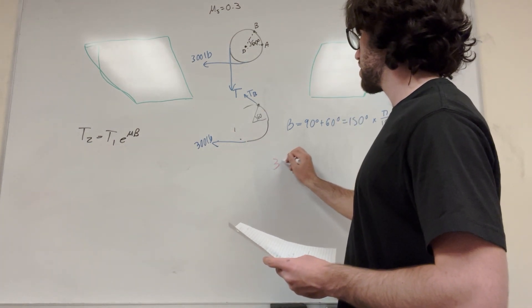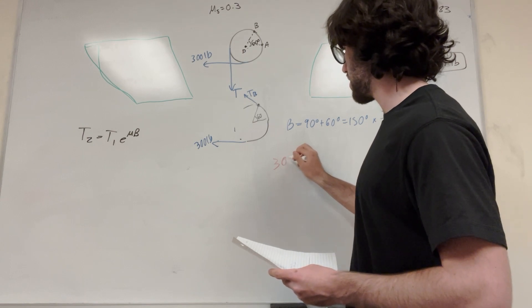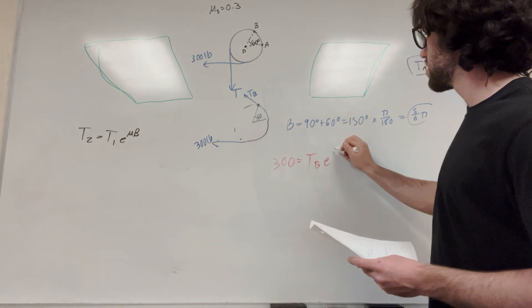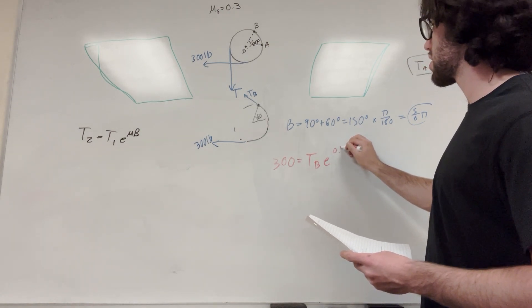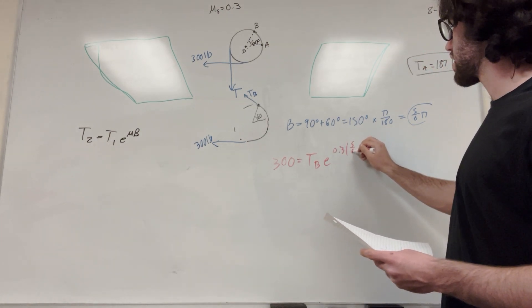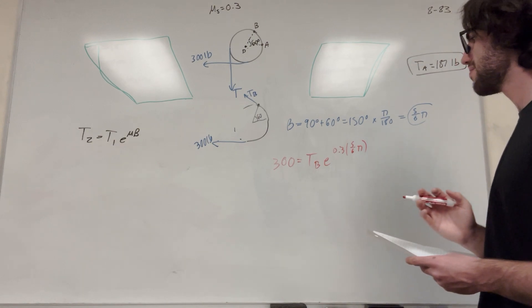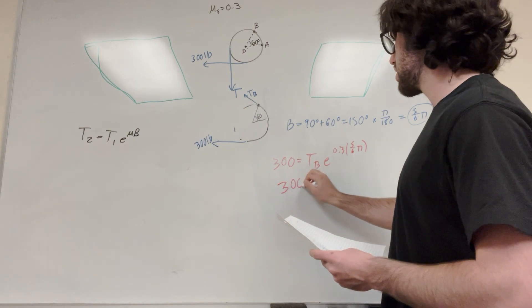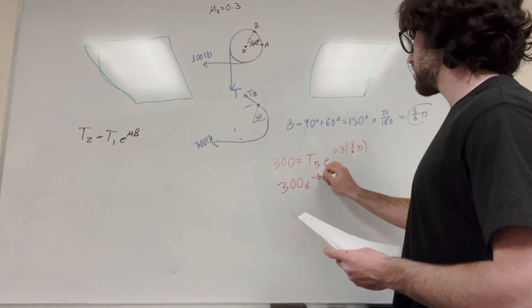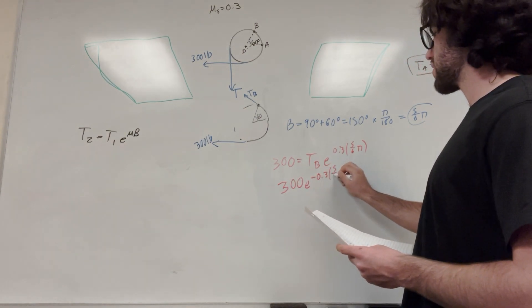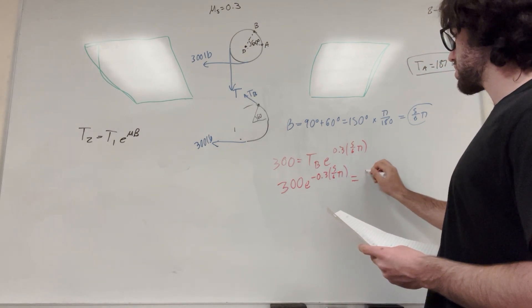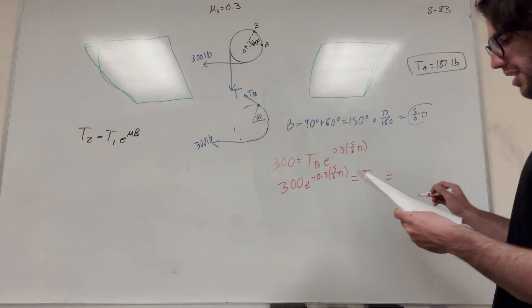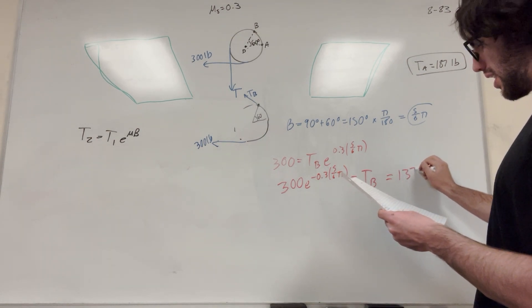So we're going to get that 300. This marker's kind of dead, but it's okay. It's equal to tension at B, E, to the 0.3 times 5 over 6 pi. So then, of course, we're solving for T. So we're going to add that over. 300, E to the negative 0.3 times 5 over 6 pi, is equal to TB. Solve this. You get tension at B. It is 137 pounds. So there you go.